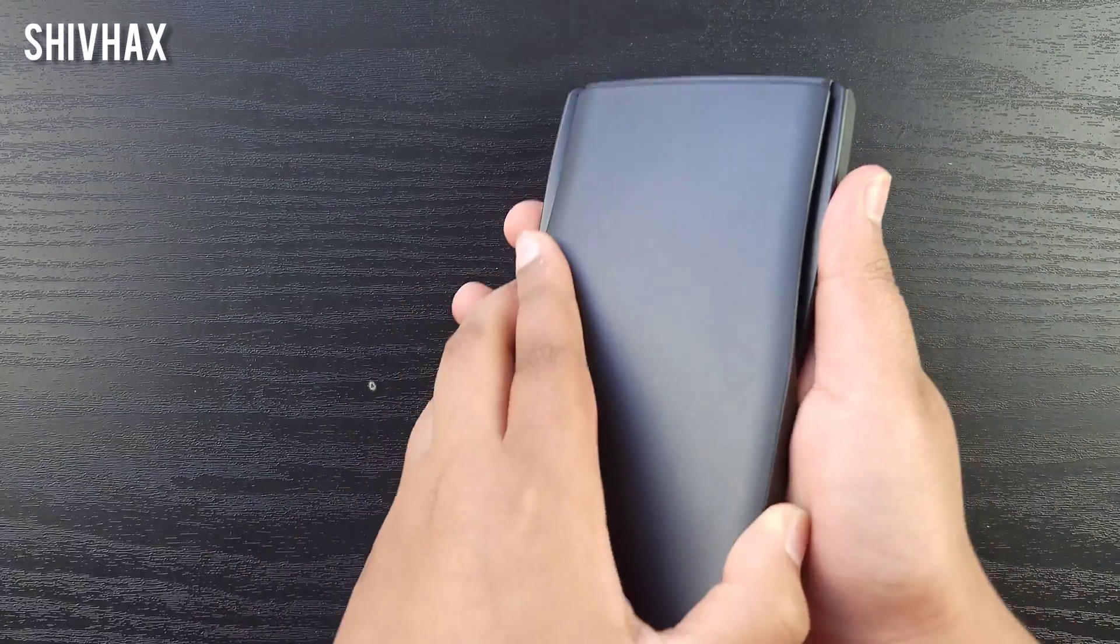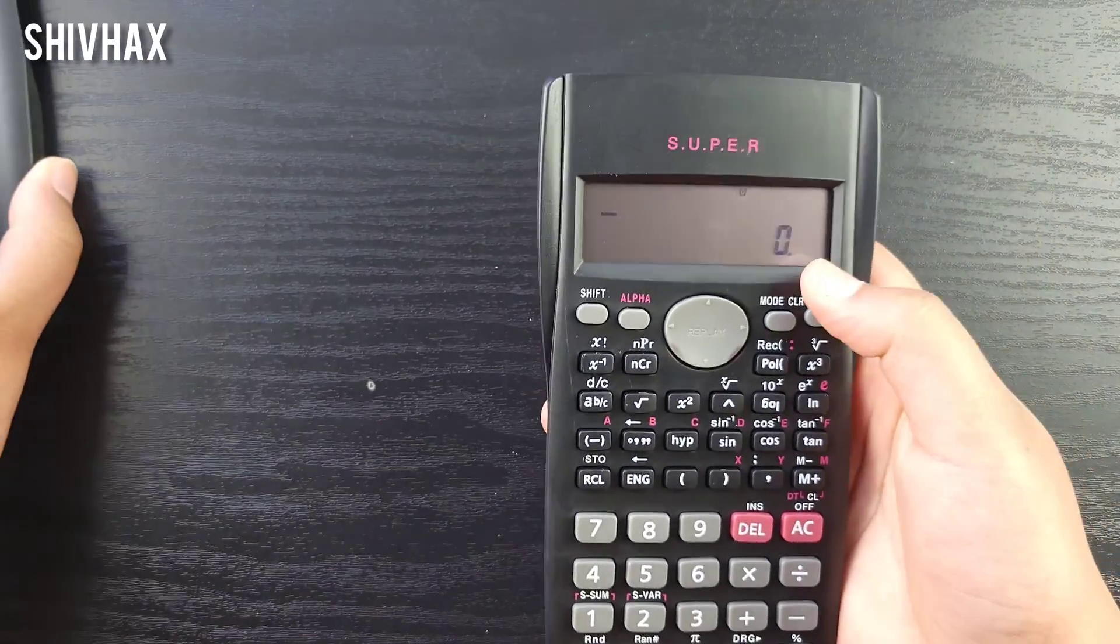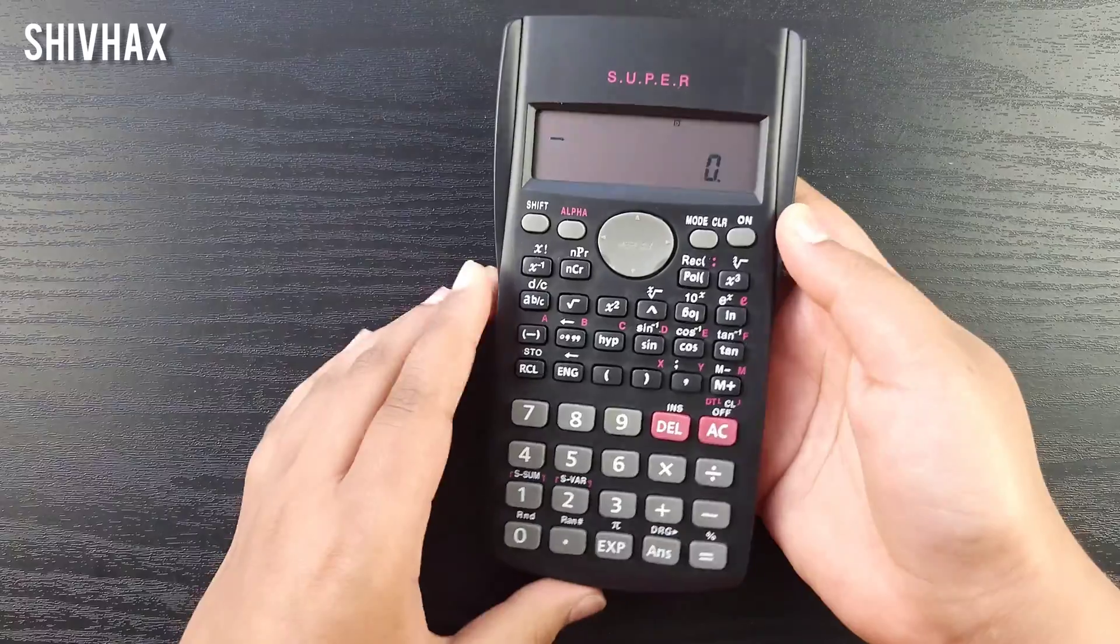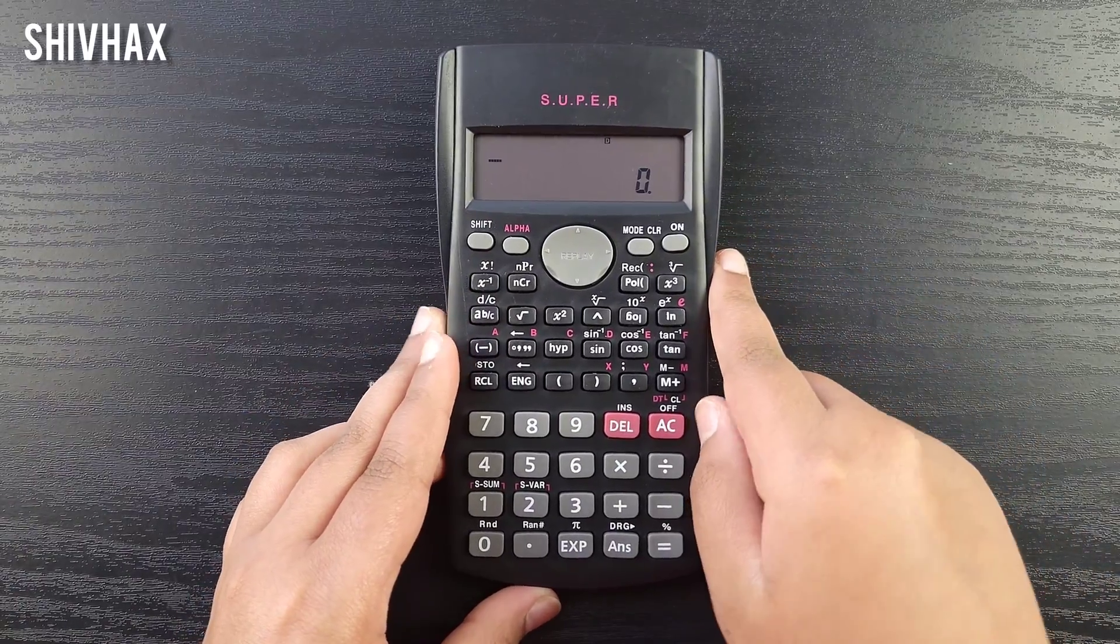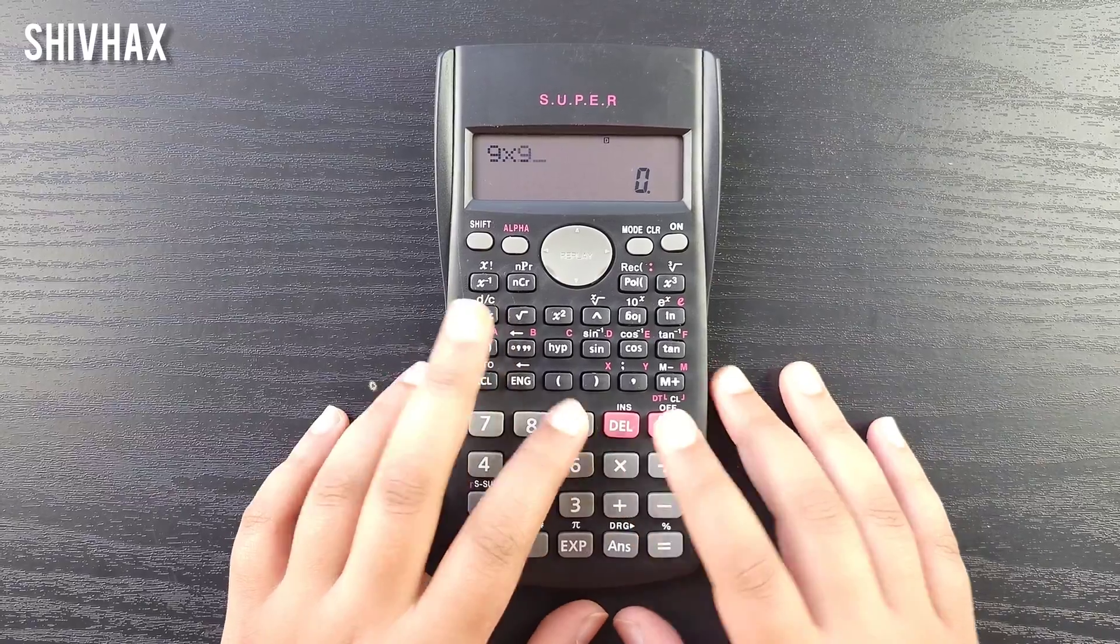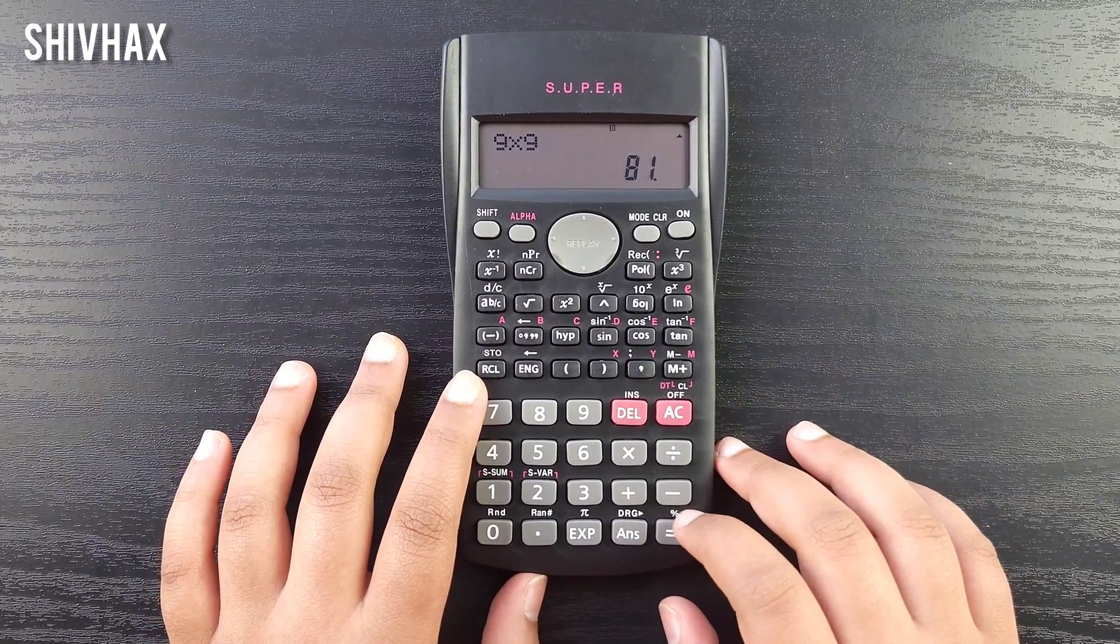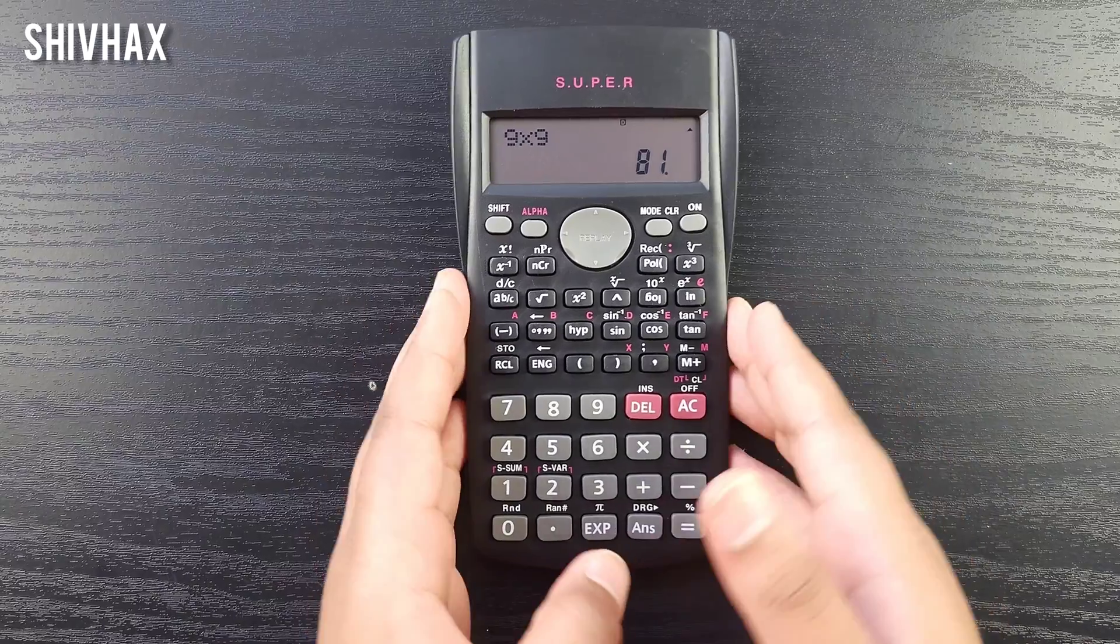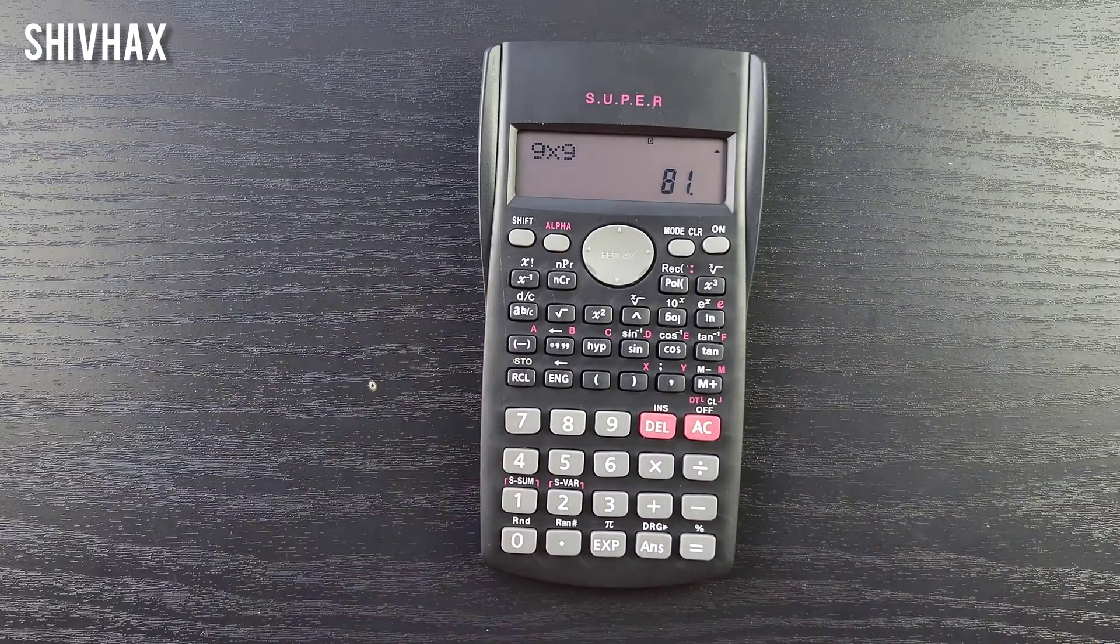The batteries are in, now let's turn it on. Oh, you can see it's already turned on. I can do basic calculations like what's 9 times 9? Well, 81. I hope you find this video helpful.